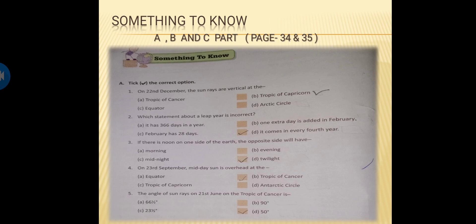Now come to question number 4. On 23rd September, midday sun is overhead at the equator. Option A, equator. Option 2, Tropic of Cancer, no. Option C, Tropic of Capricorn, no. And option D, Antarctic Circle. So what is the correct answer? Equator. Equator is the correct answer.